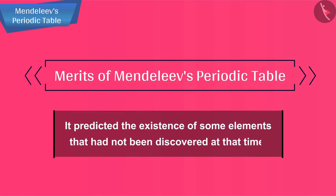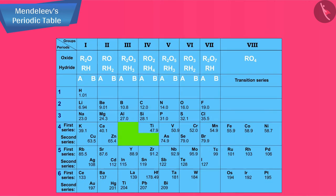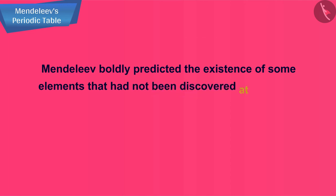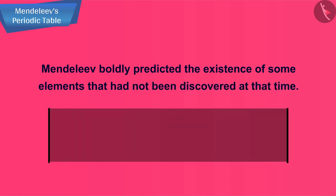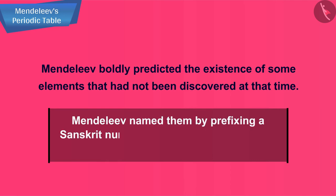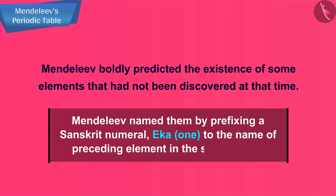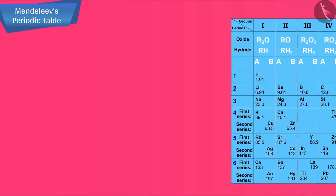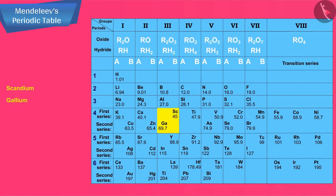We will now discuss the merits of Mendeleev's periodic table. It predicted the existence of some elements that had not been discovered at that time. Mendeleev left some gaps in his periodic table. Instead of looking upon these gaps as defects, Mendeleev boldly predicted the existence of some elements that had not been discovered at that time. Mendeleev named them by prefixing a Sanskrit numeral Eka (one) to the name of preceding element in the same group.